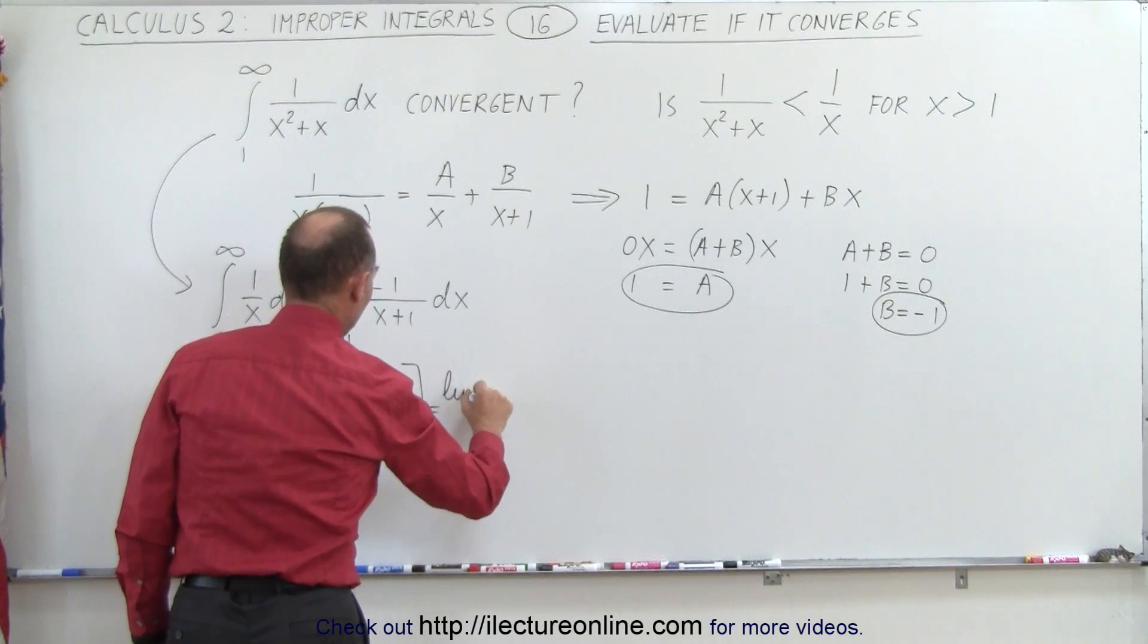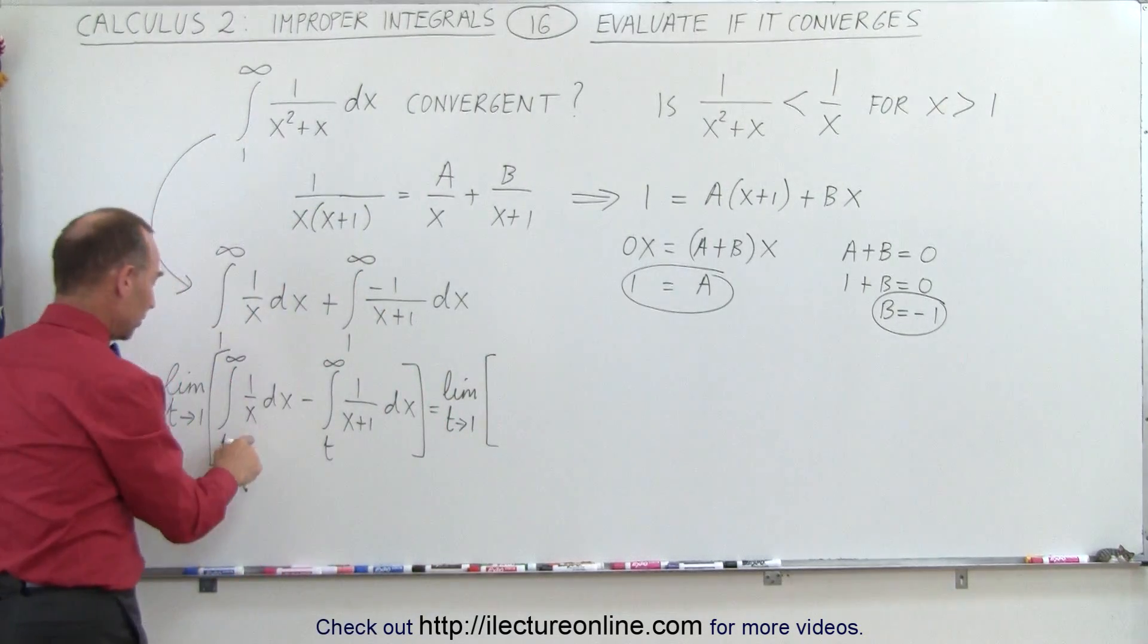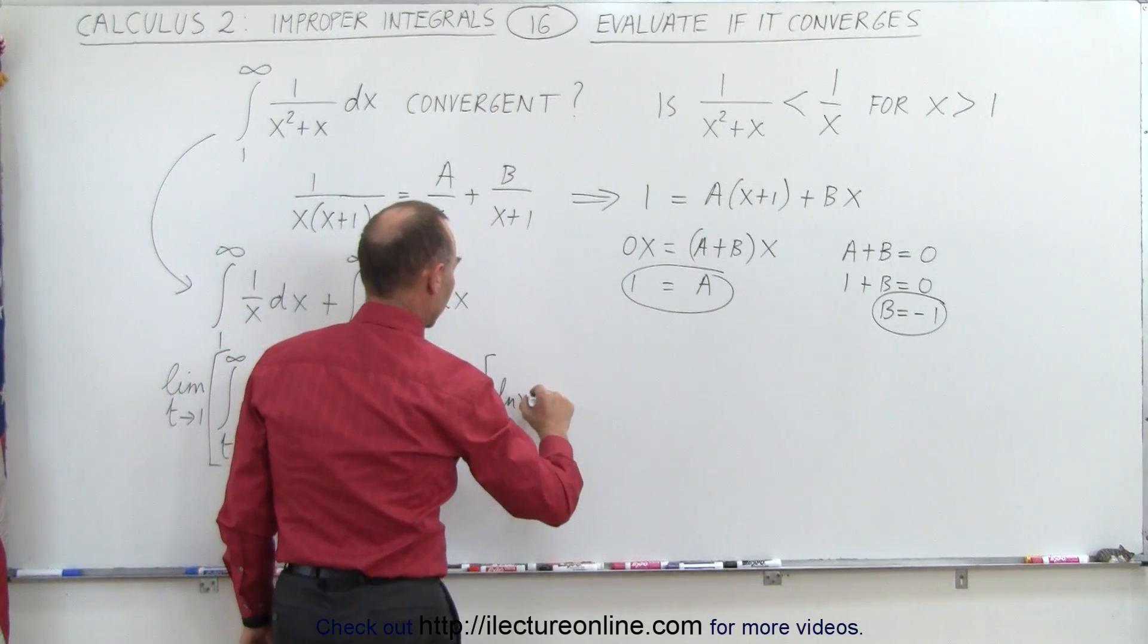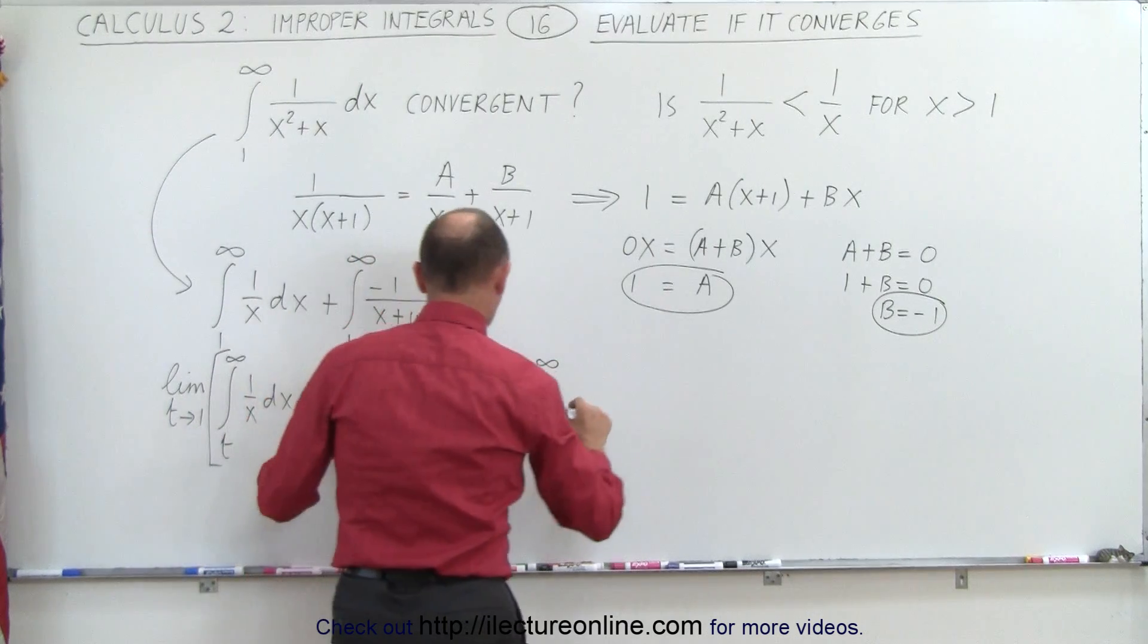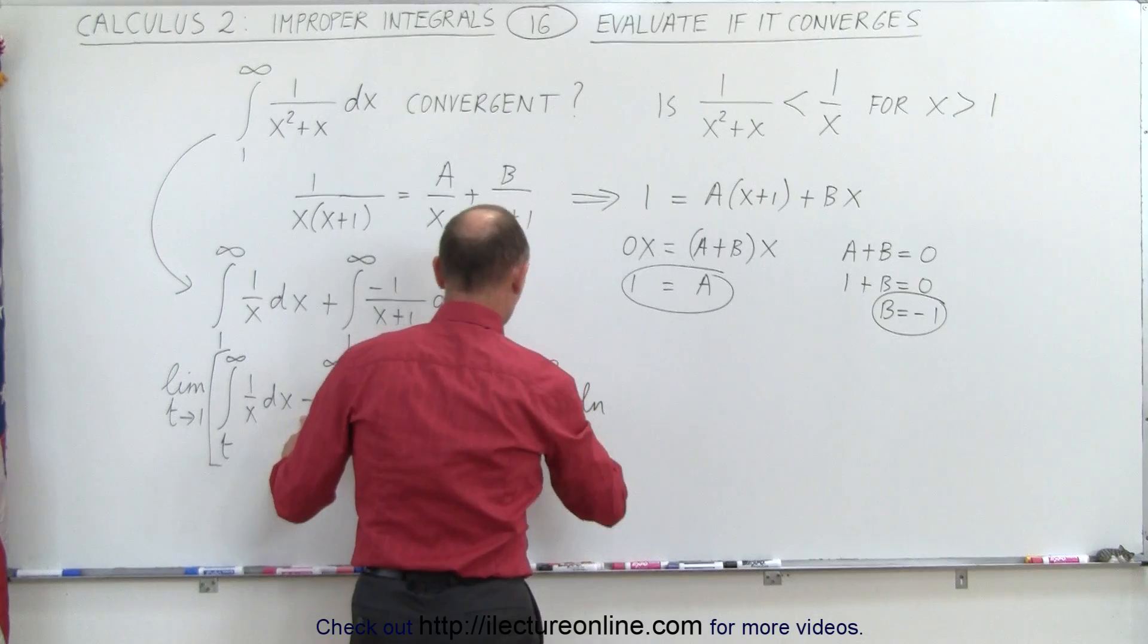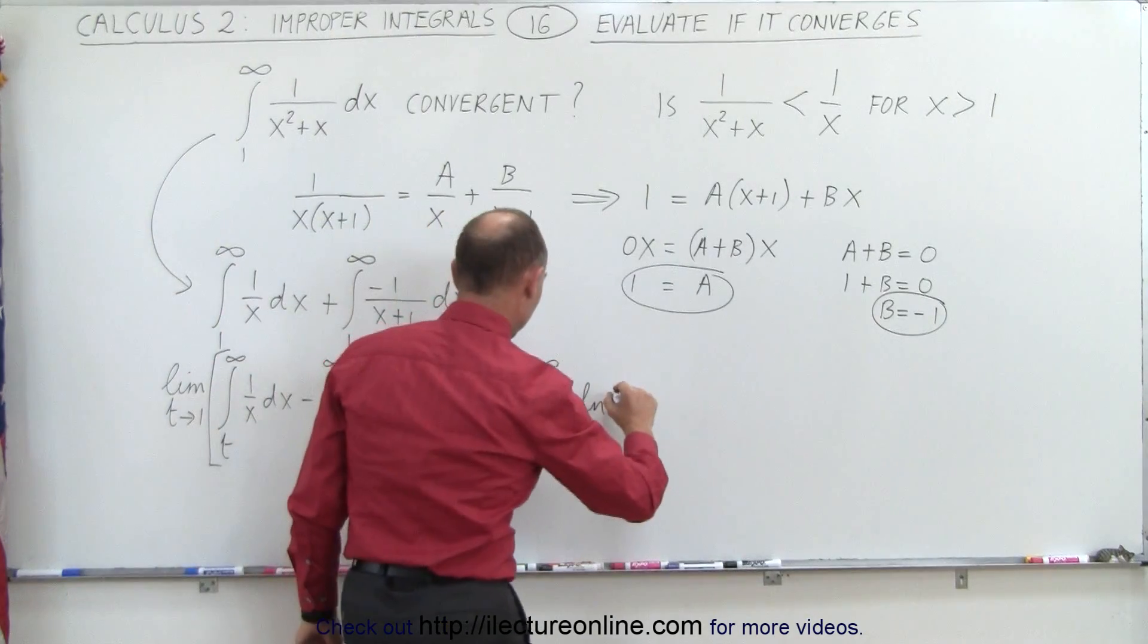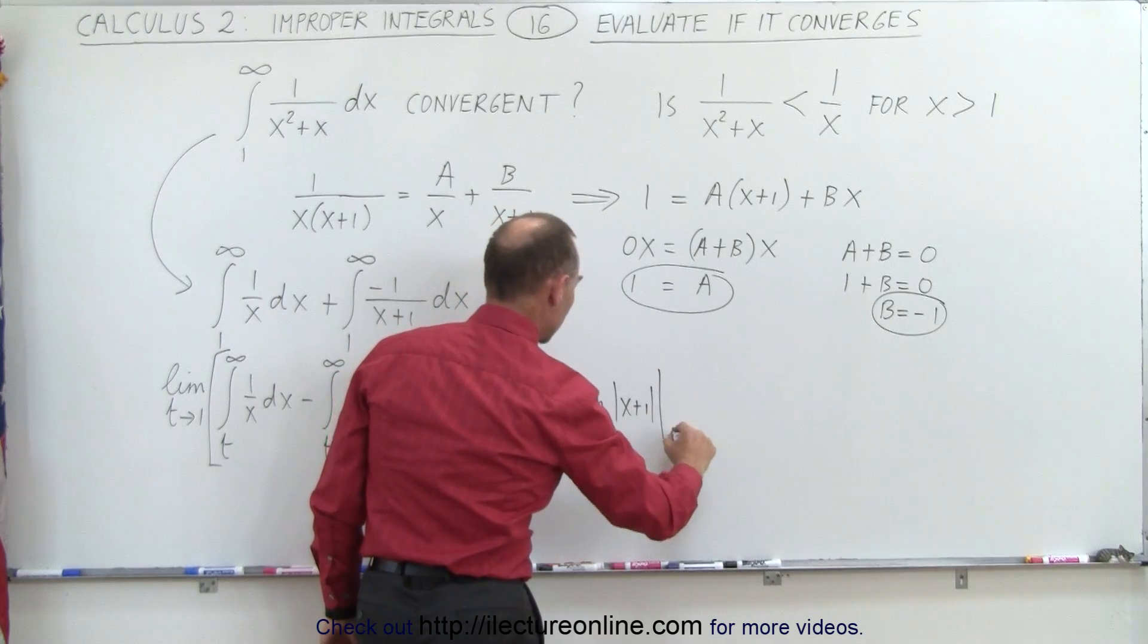Let's go ahead and try to evaluate that and see what we get. This is equal to the limit as t goes to infinity of, when we integrate the first one, we get the natural log of x evaluated from t to infinity. And then we have minus the natural log of x plus 1 evaluated from t to infinity.